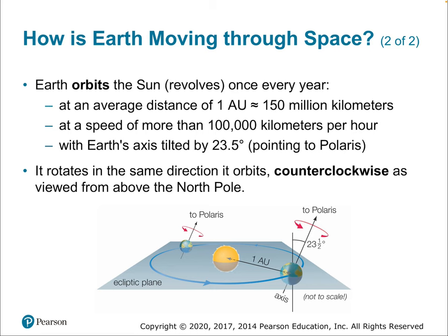Earth also orbits the Sun. The average orbital radius is one AU — about 150 million kilometers. To complete one orbit per year, Earth must move at about 100,000 kilometers per hour. Earth has an axial tilt of 23.5 degrees, which varies slightly over thousands of years. It rotates and orbits in the same direction — counterclockwise as viewed from above the north pole.